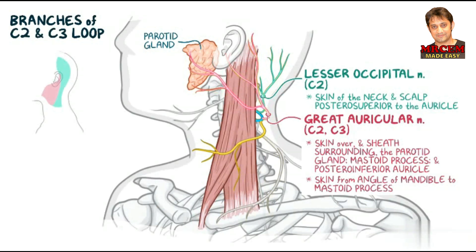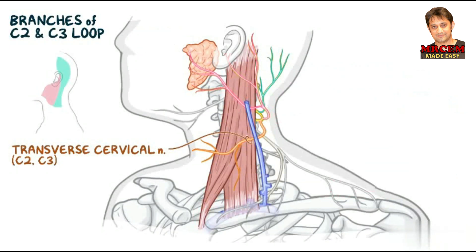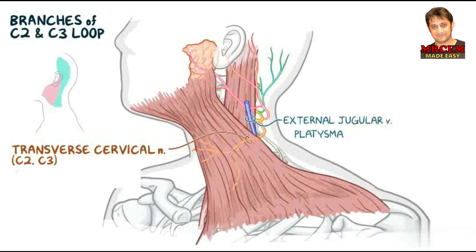There is also the transverse cervical nerve, which also contains fibers from C2 and C3. It curves around the middle of the posterior border of the SCM, passing anteriorly and horizontally across it, deep to the external jugular vein and the platysma, to innervate the skin covering the anterior triangle.